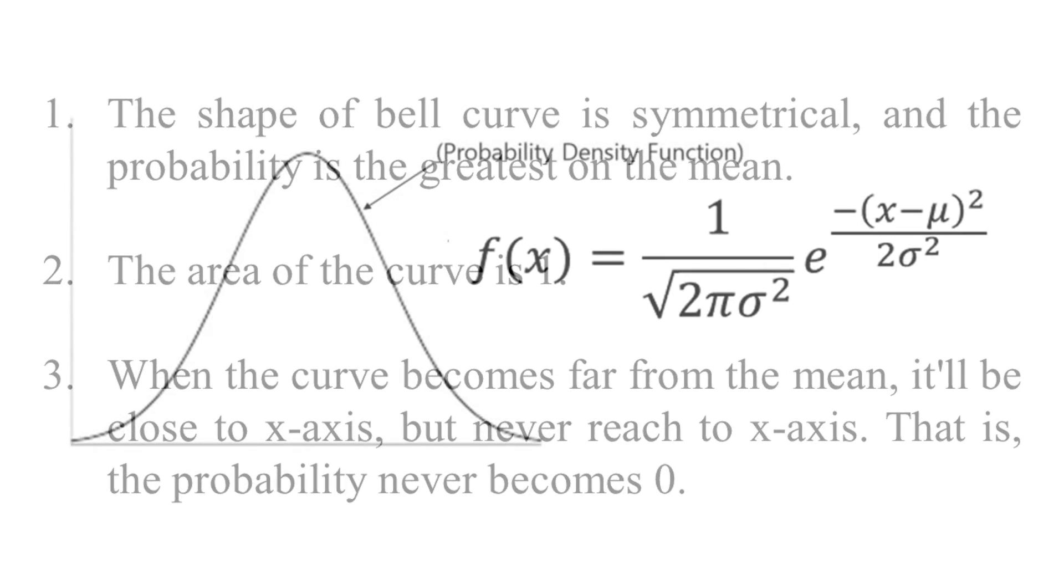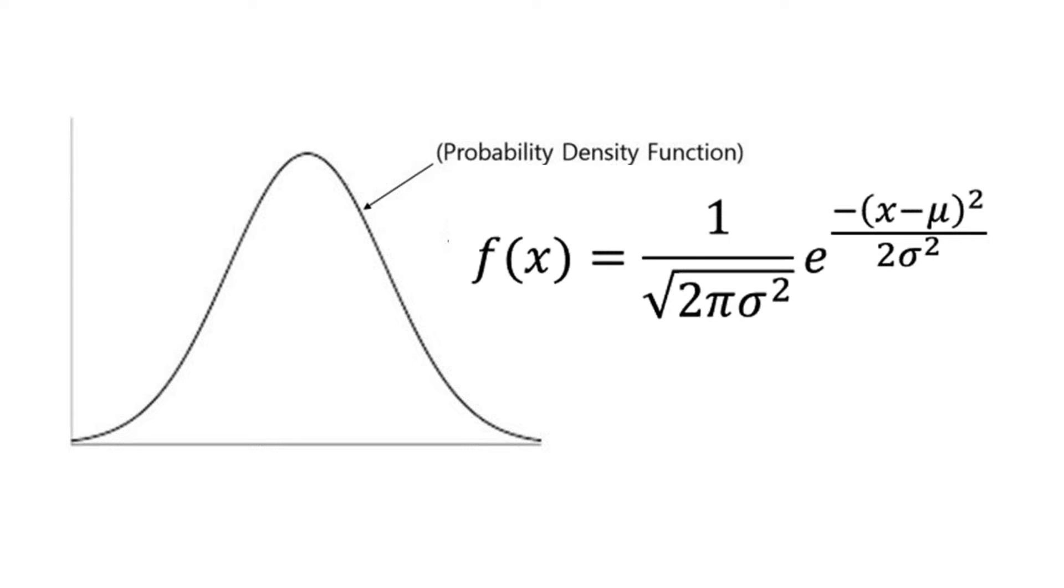This is the formula of probability density function. It seems tricky, but actually it's so simple. X is each observational value, μ (mu) is average, σ (sigma) is standard deviation, and therefore σ² (sigma square) is variance. π (pi) is the pi value which is 3.14159, etc. e is Euler's number. If we practice to calculate PDF by hand, you'll realize that it's a piece of cake.